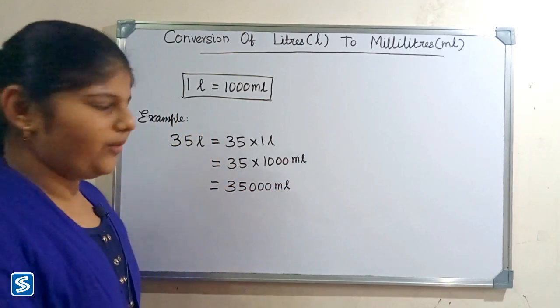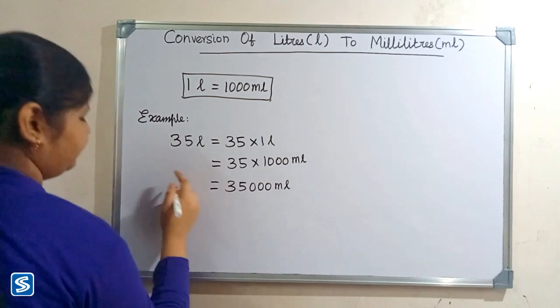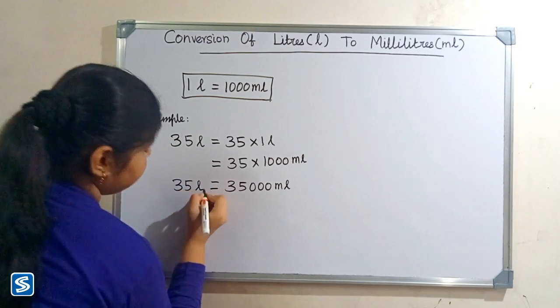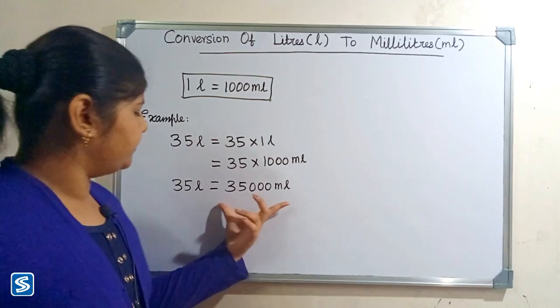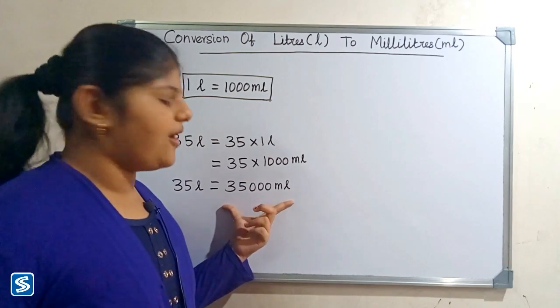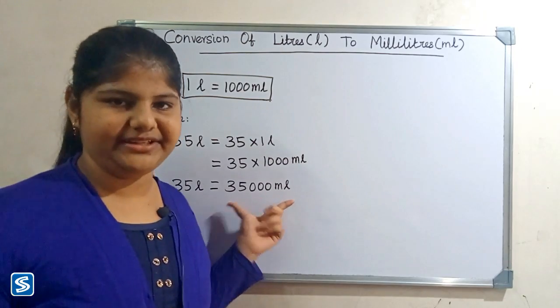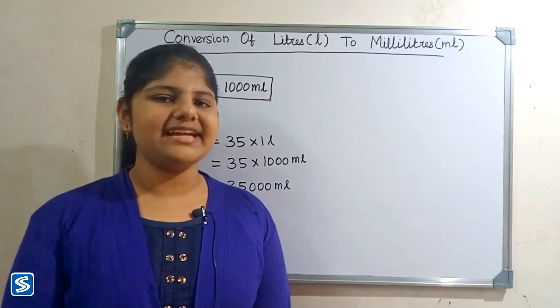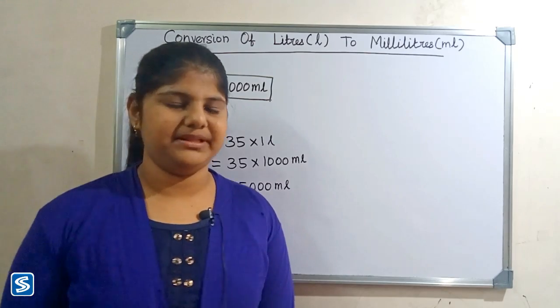So 35 liters is equal to 35,000 milliliters. Next we will take another example.